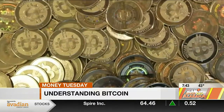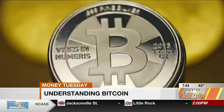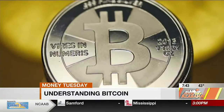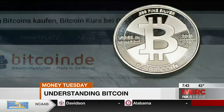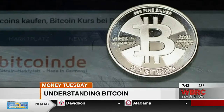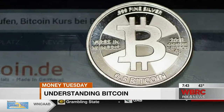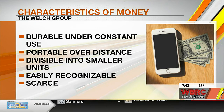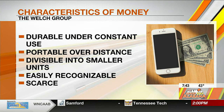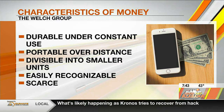Throughout history, there have been certain principles of money which people have coalesced around, and it's really five main principles. The first is that money has to be durable — it has to withstand constant use. It has to be portable, easily transferable over distance. It has to be divisible, able to be broken down into smaller units. And then obviously it has to be recognized against counterfeit currency. And last but not least is the scarcity component — it has to be scarce. We can't have an infinite amount of money because then it would essentially be worthless.